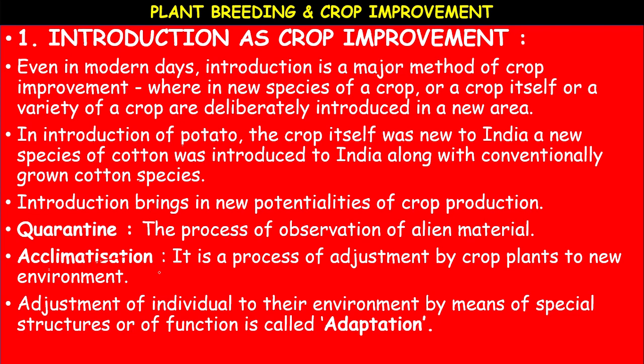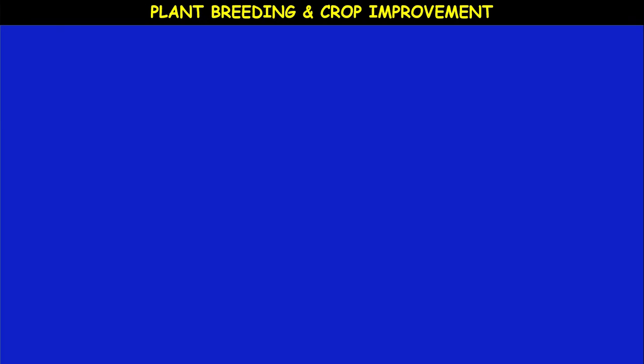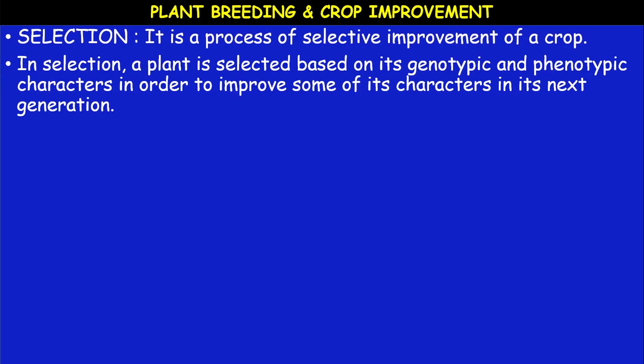Adaptation to the new environment is one important characteristic feature. Selection is the next method. Before going to selection, let us understand what adaptation means. Adaptation refers to the environmental conditions which are suitable; for those conditions, these plants develop some new characters. That is called adaptation.